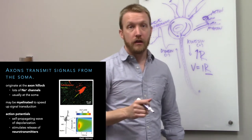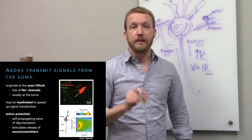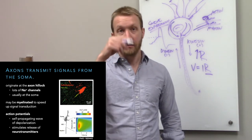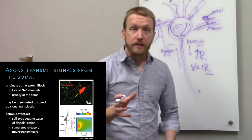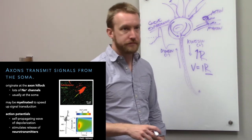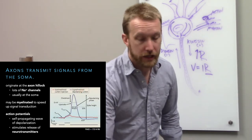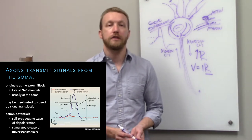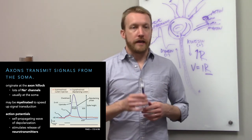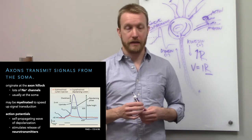The second important aspect: this neuron was filled with sulforhodamine (a red dye) and stained for voltage-gated sodium channels using an antibody colored green. You can see a big red cell body and then a green axon — the axon is filled with sodium channels. Sodium channels cause the depolarization in the action potential. So the axon may also be covered with myelin to speed up signal transduction; we'll talk about that in lecture four.